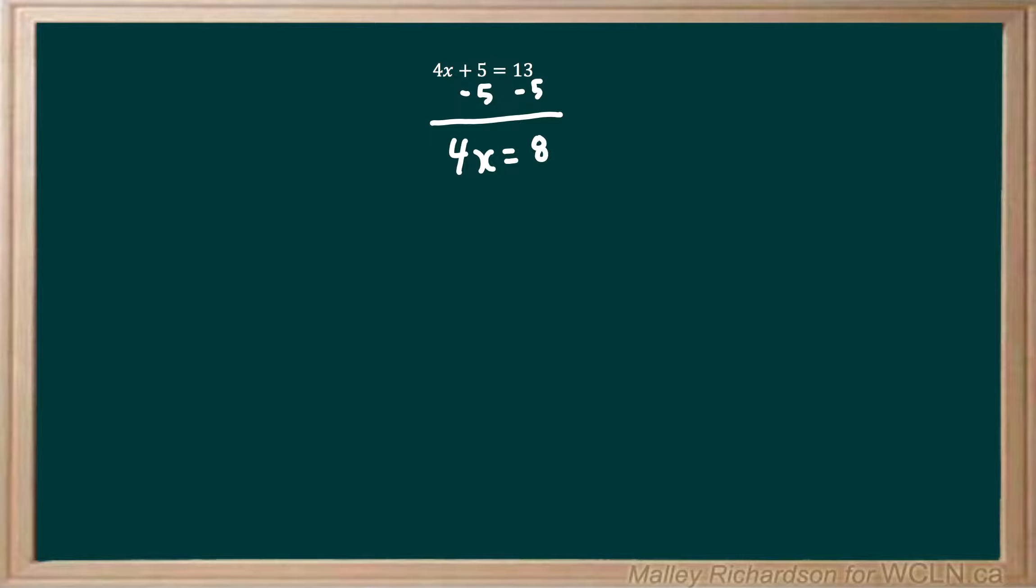Now we have 4x equals 8, and we want to get rid of this multiplication between the 4 and the x by dividing it by 4.